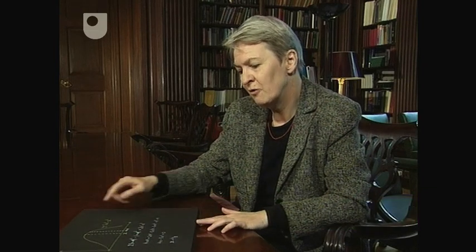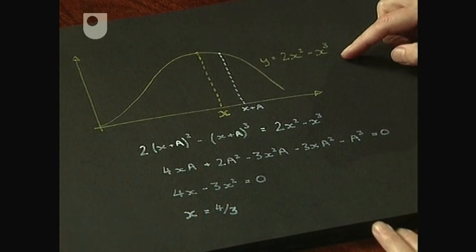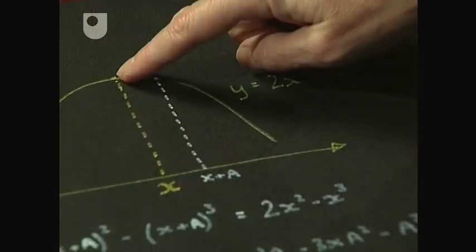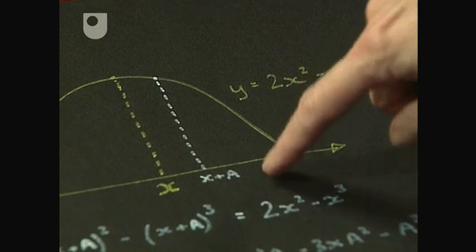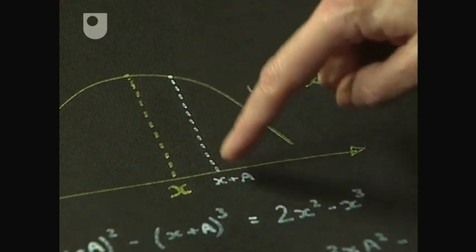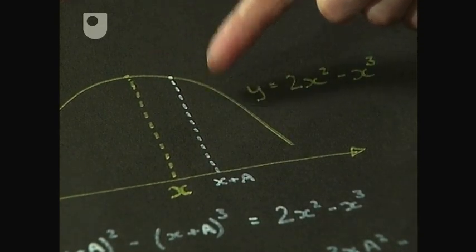We look at an example which Fermat also presented. Here you have a curve, y equal 2x squared minus x cubed, and that curve may have a maximum at x. x plus a then is a nearby value. The two values of y here are nearly equal, as you can see on the picture.